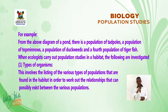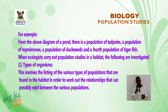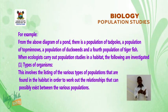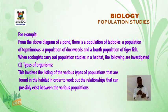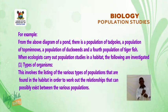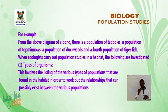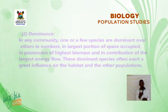When ecologists carry out population studies in a habitat, the following are investigated. First: Types of Organisms — this involves listing the various types of populations found in the habitat in order to work out the relationships that can possibly exist between the various populations.